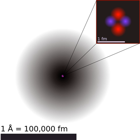The d-block contraction is less pronounced than the lanthanide contraction but arises from a similar cause. In this case, it is the poor shielding capacity of the 3d electrons which affects the atomic radii and chemistry of the elements immediately following the first row of the transition metals, from gallium to bromine.